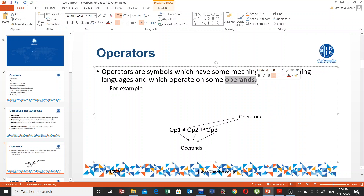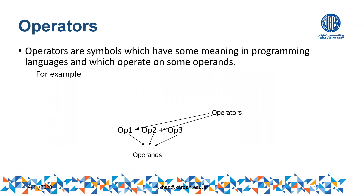Operands may be constants or variables. For example, op1 is operand 1, op2 is operand 2, and op3 is operand 3 — these are basically variables. In an expression like op3 = op1 + op2, we have used one arithmetic operator and one assignment operator. Both of these are operators, while op1, op2, and op3 are called operands. The expression on the right side is evaluated to a single value, which is then assigned to the variable through the assignment operator.